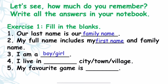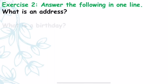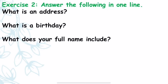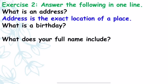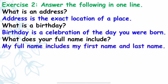Next, answer the following in one line. Question one: What is an address? Question two: What is a birthday? Question three: What does your full name include? Now the answers: Address is the exact location of a place. Birthday is a celebration of the day you were born. My full name includes my first name and last name.